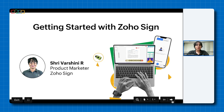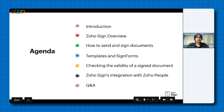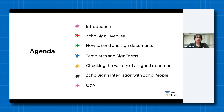Now let us move on to have a look at the agenda of this session. To start with, we will quickly go over the introductory part and then move on to talk about ZogoSign. I will then be giving you an overview of the application with its most basic features. We will then see how you can validate a digitally signed document. After that, I will be giving you a short basic overview of ZogoSign's integration with ZogoSign. Towards the end, we'll have a Q&A session, but you don't have to wait till the end to ask questions — keep them coming in the Q&A box.